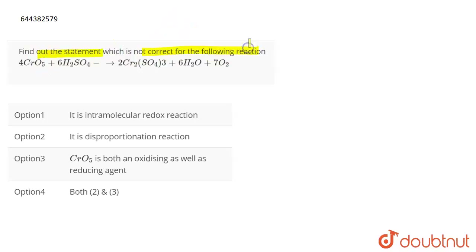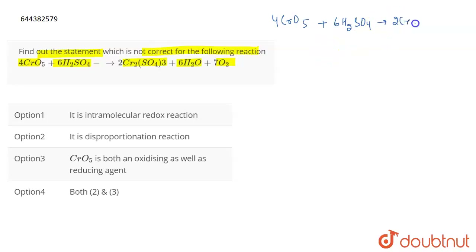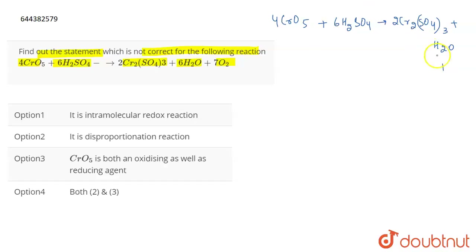The question is: find the statement which is not correct for the following reaction. The reaction is CrO5 + H2SO4 → Cr2(SO4)3 + H2O + O2. Let's write down this balanced reaction: 4 CrO5 + 6 H2SO4 → 2 Cr2(SO4)3 + 6 H2O + 7 O2.